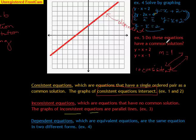Let's review the terminology. Consistent equations have a single ordered pair as a common solution — consistent equations intersect. Inconsistent equations have no common solution; their graphs are parallel lines, as in Example 3. Dependent equations are equivalent equations — the same equation in two different forms, like Example 4. Hopefully that all made sense. I'll be answering more help questions tomorrow. That's it for Lesson 81.